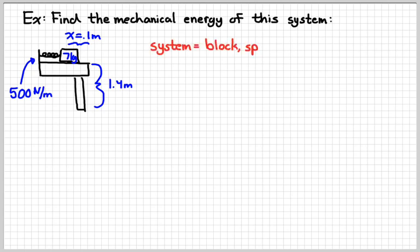So we're going to define the system that's going to be important to us to consist of that seven kilogram block, the spring itself, and the Earth. If I define my system that way, then I have two potential energy terms: potential energy due to gravity, and the potential energy due to the spring, plus we will always have a kinetic energy term.